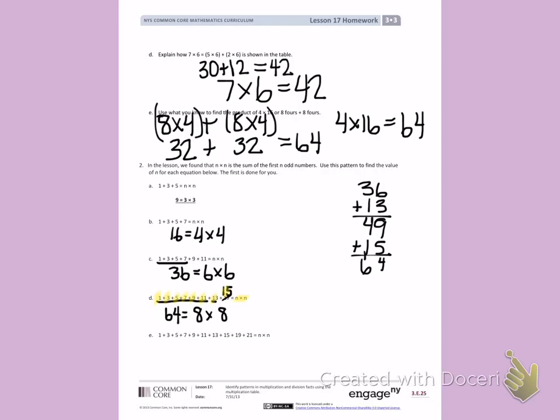That also works for C. 1, 2, 3, 4, 5, 6. That's why our problem was 6 times 6. Let's see if it works for B. 1, 2, 3, 4. Our problem was 4 times 4. Let's see if it works for A. 1, 2, 3. A has 3. And our problem was 3 times 3.